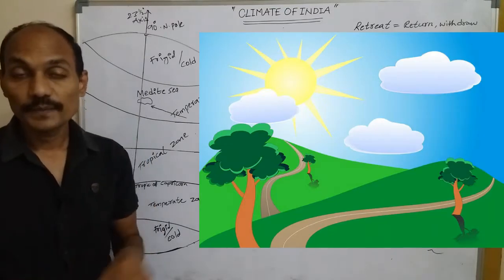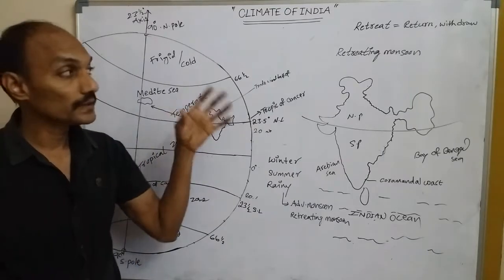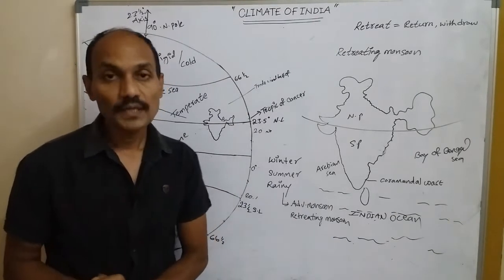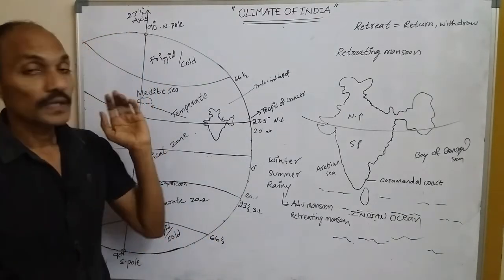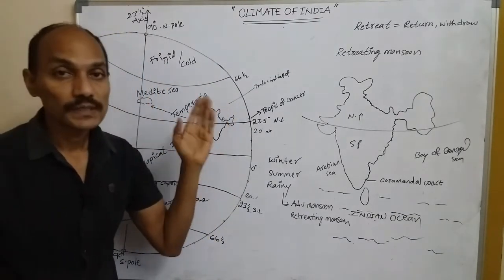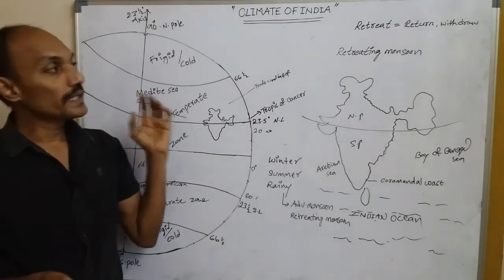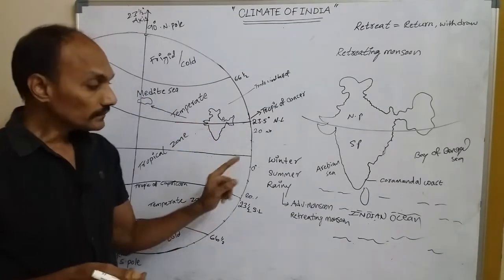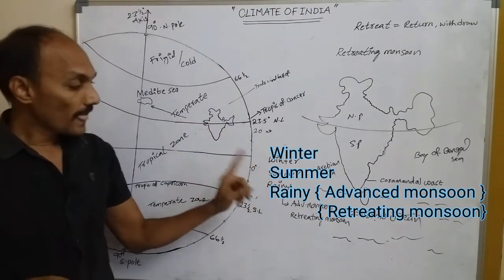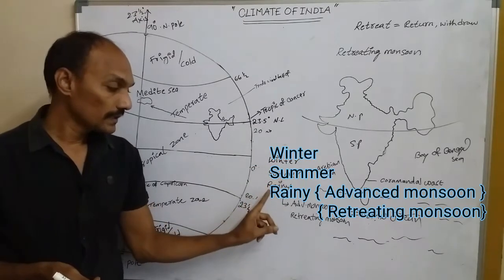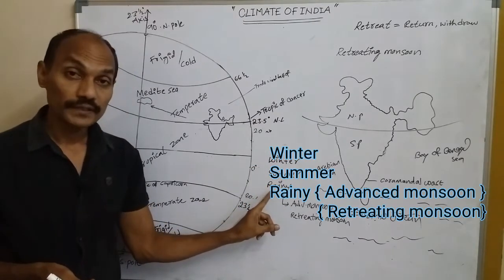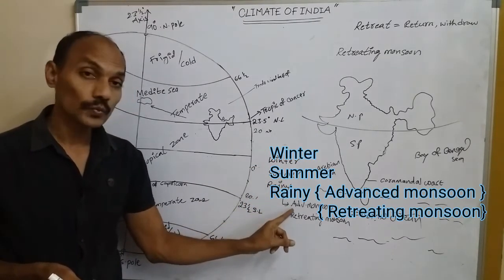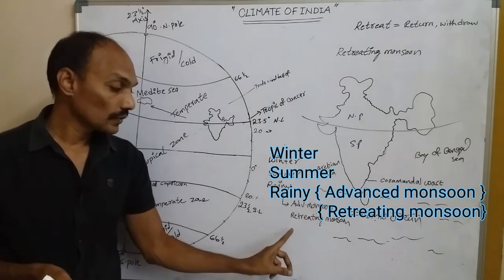For example, yesterday the weather was raining but today the weather is nice and sunny — that means weather changes day to day. Now let's move to the seasons. Indian seasons are divided into three: winter, summer, and rainy. Rainy is again divided into two — advanced monsoon and retreating monsoon.